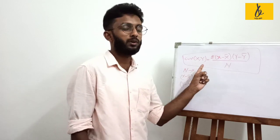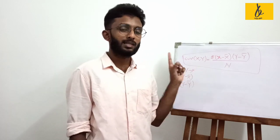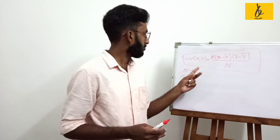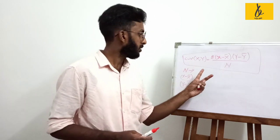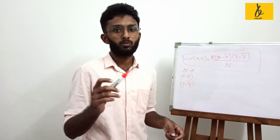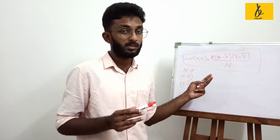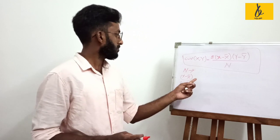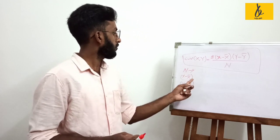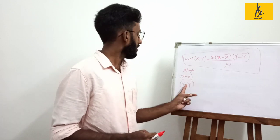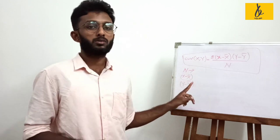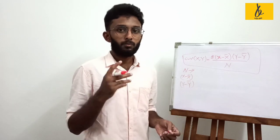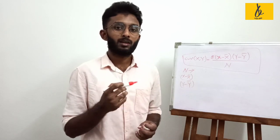In this method, we can consider the number of variables. We can consider the pairs. The value of x and y is equal to the number of pairs. The number of pairs is equal to n. x minus x-bar is the difference of x from its mean. And y minus y-bar is the difference of y from its mean.